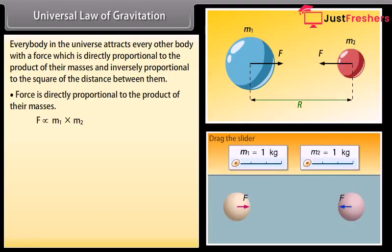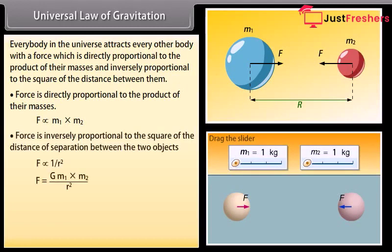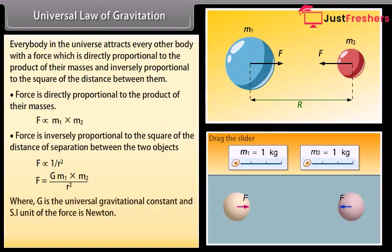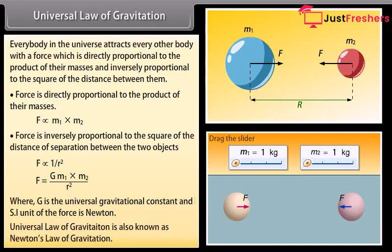Force is directly proportional to the product of their masses, and force is inversely proportional to the square of the distance of separation between the two objects. G is the universal gravitational constant and the SI unit is Newton. This universal law of gravitation is also known as Newton's law of gravitation.